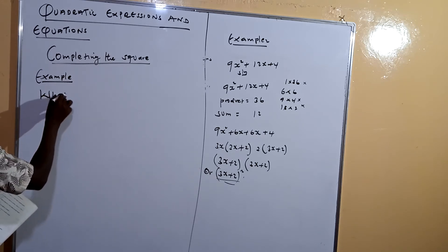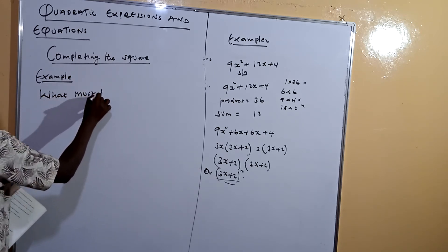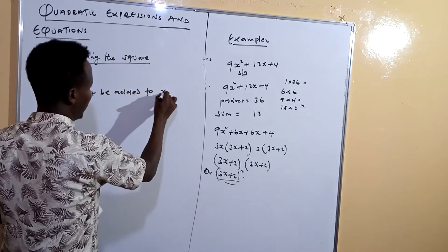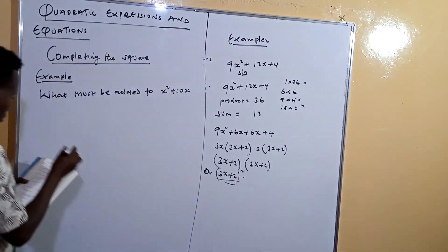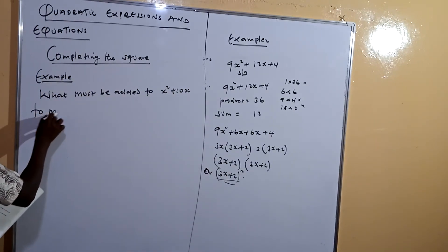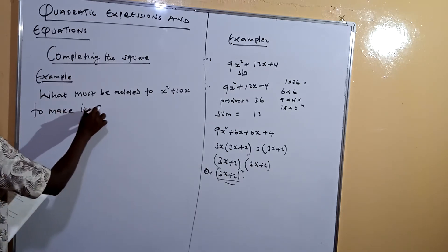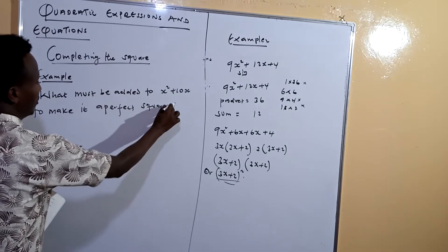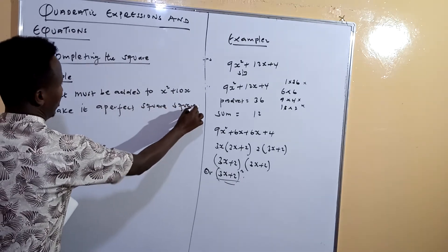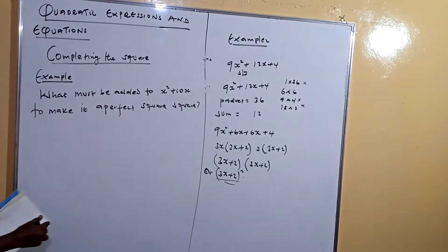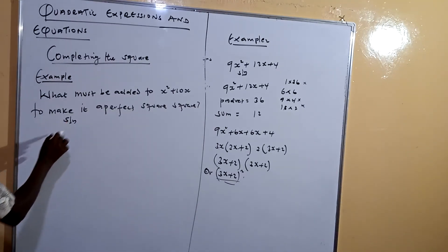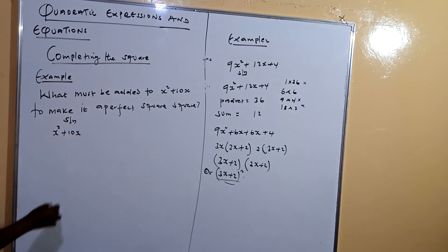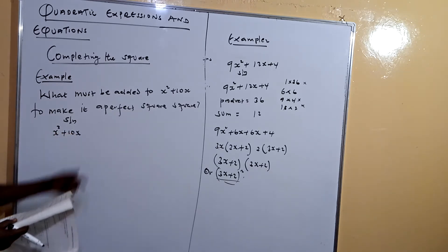Example 1: What must be added to x squared plus 10x to make it a perfect square? This is a crucial question.